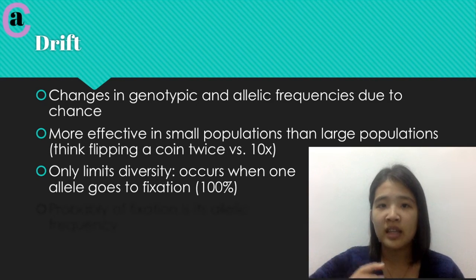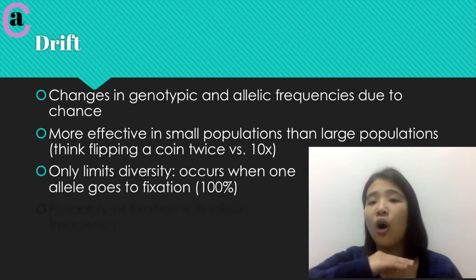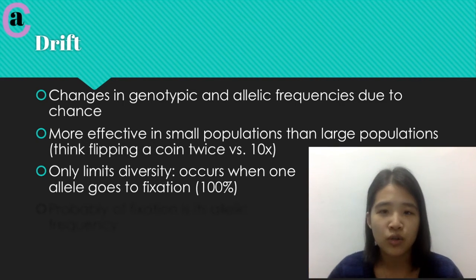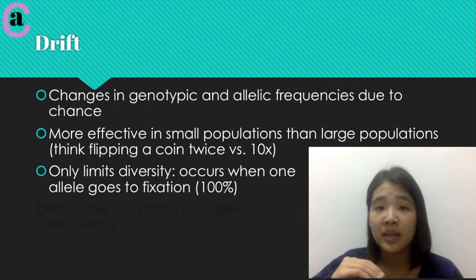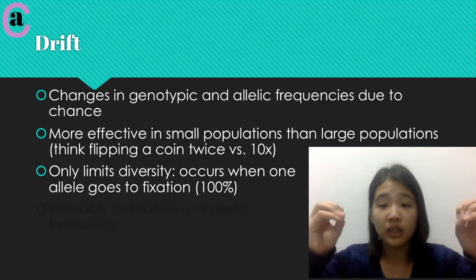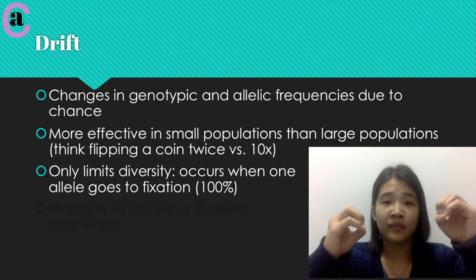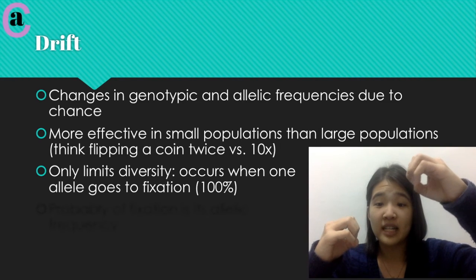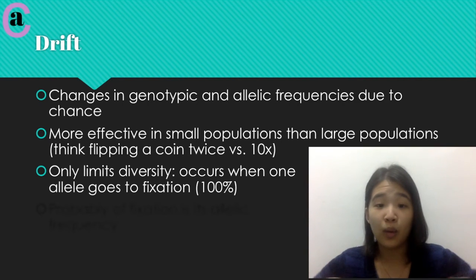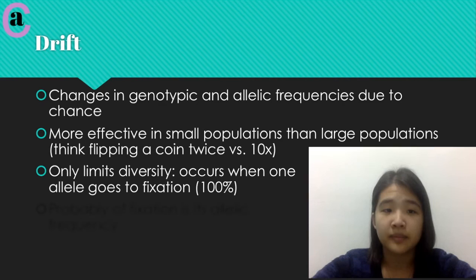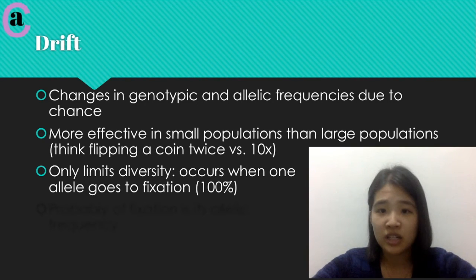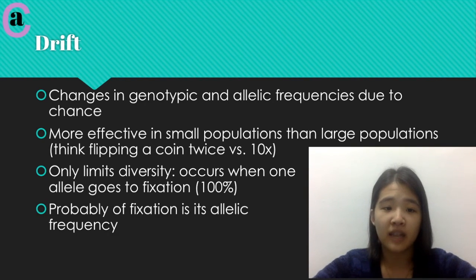And drift, when you are talking about genetics, is only a limiting factor in diversity. So it doesn't introduce new genes or new alleles. It basically only limits diversity, and this occurs when fixation happens. So if you have two alleles and the proportion of one of them starts to increase while the other decreases, and eventually the proportions become zero and 100%, then you have fixation.